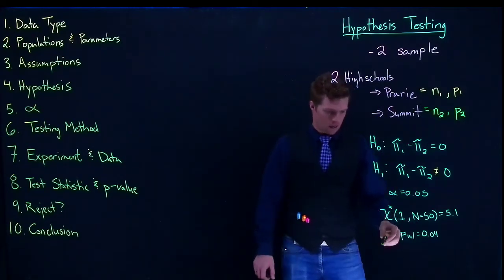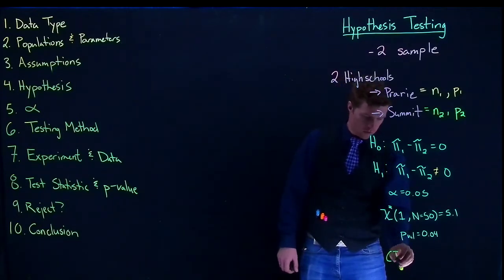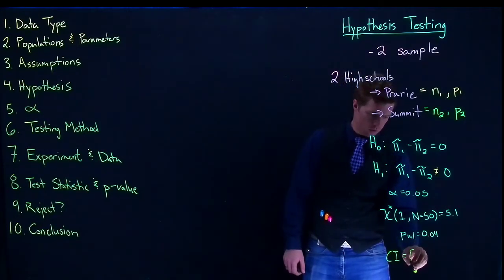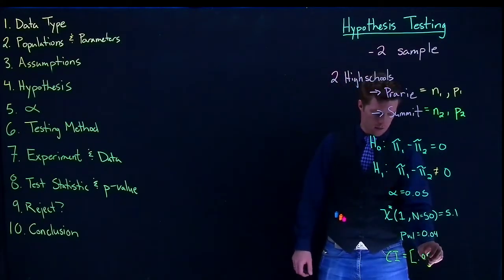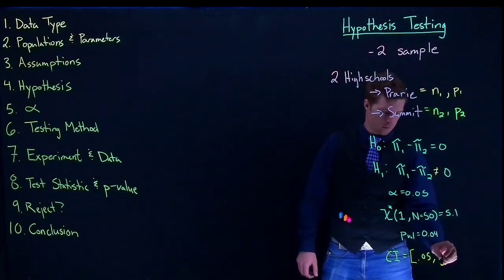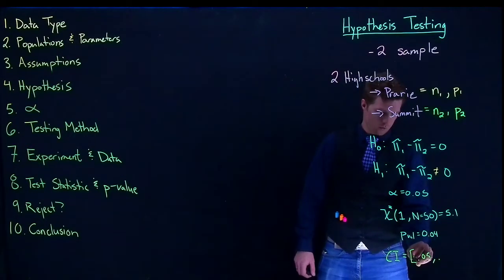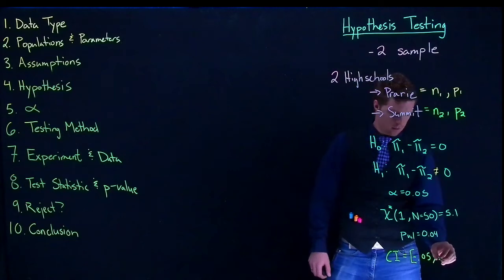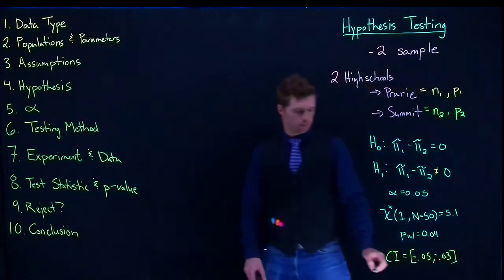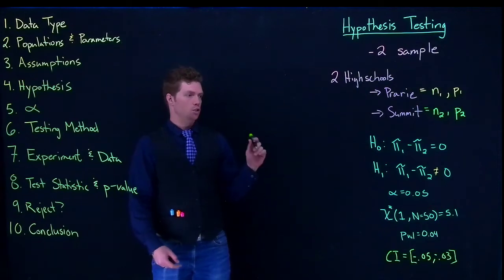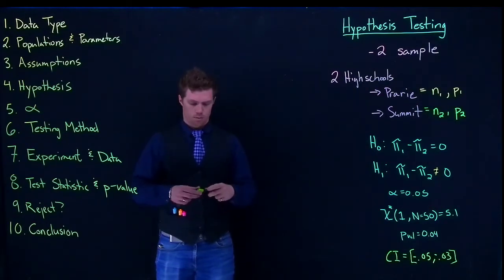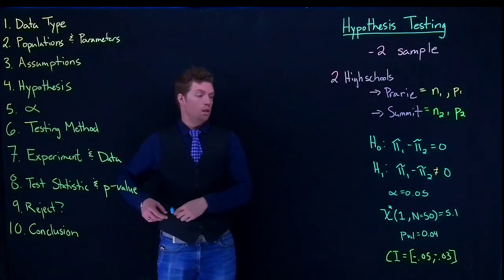Oh, and I need a confidence interval real quick. We'll do a confidence interval equals 0.05, but you know what, we'll do negative 0.05 comma negative 0.03. I wanted those negatives in there just so that we can do a little bit different here.